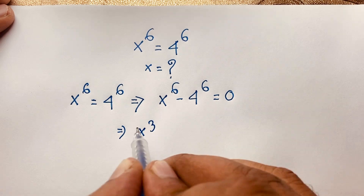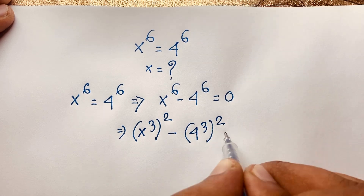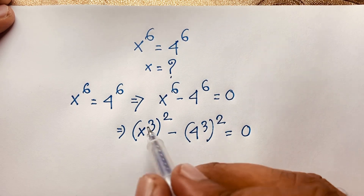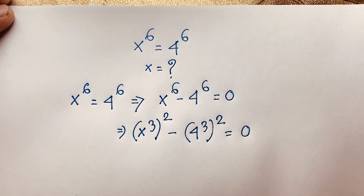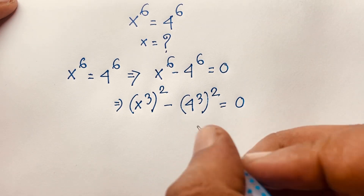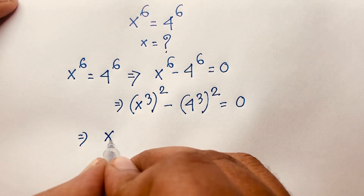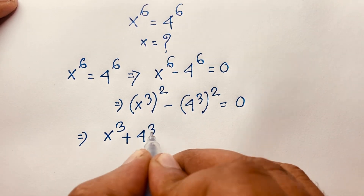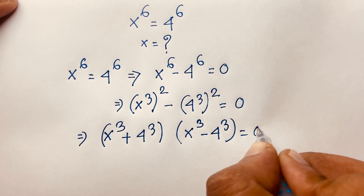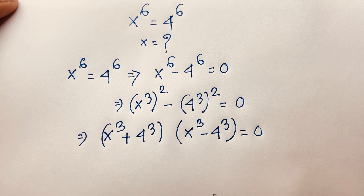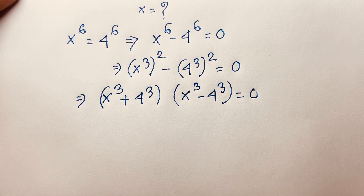Now you can see this expression: it will be x to the power three, whole to the power two, minus four to the power three, whole to the power two, is equal to zero. Because two times three equals six, according to exponential law. Now using the identity a squared minus b squared equals a plus b times a minus b, I can factor this expression into x cubed plus four cubed, times x cubed minus four cubed, equal to zero.